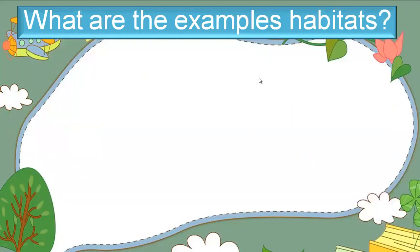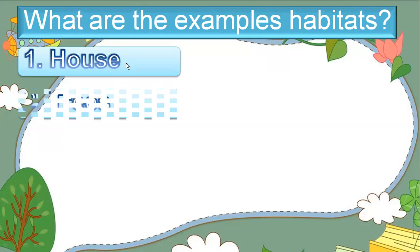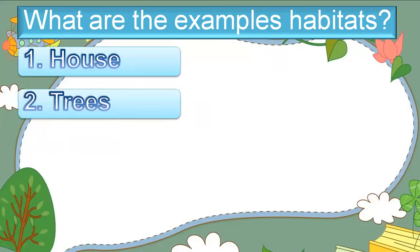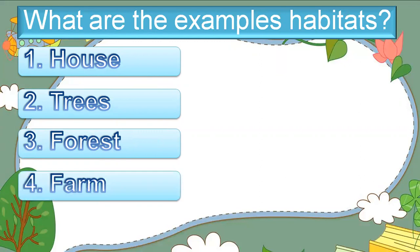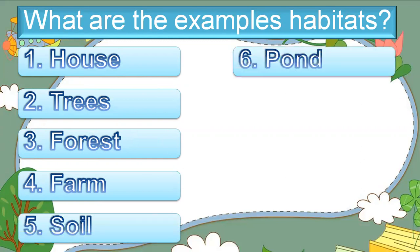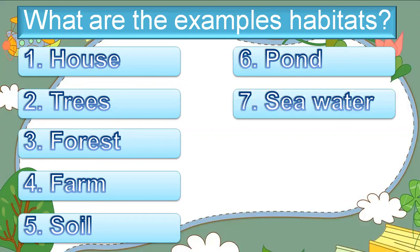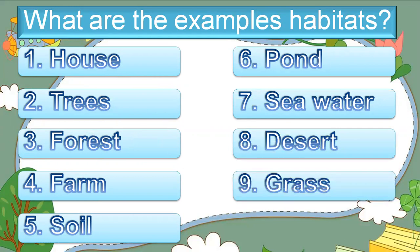What are the examples of habitat? One, house. Two, trees. Three, forest. Four, farm. Five, soil. Six, home. Seven, sea water. Eight, desert. And nine, grass. These are the examples of habitat.